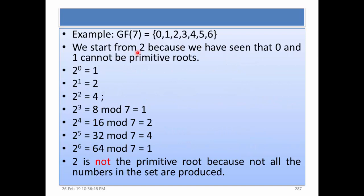We start from 2 because we know that 0 and 1 cannot be primitive roots. So we start with 2. We raise the power of 2 from 0 to 6 and we get the results 1, 2, 4, 1, 2, 4, 1. Here you can see that not all the numbers in the set from 0 to 6 are produced, hence 2 is not the primitive root.